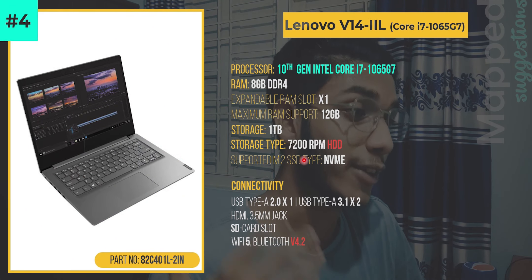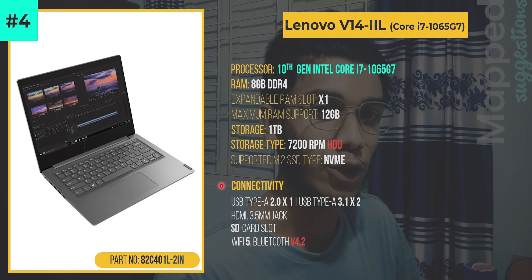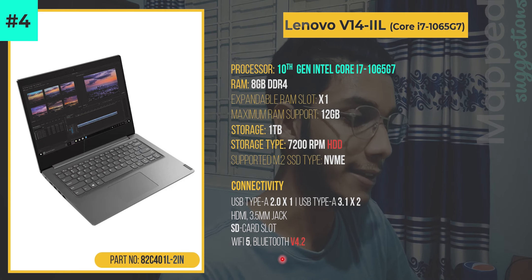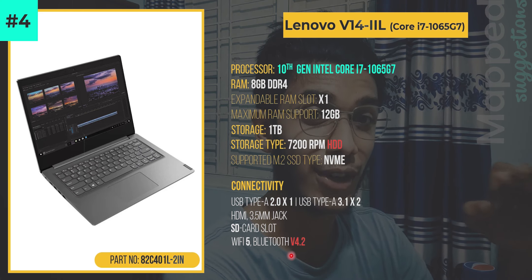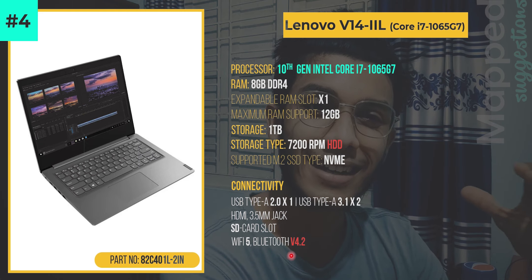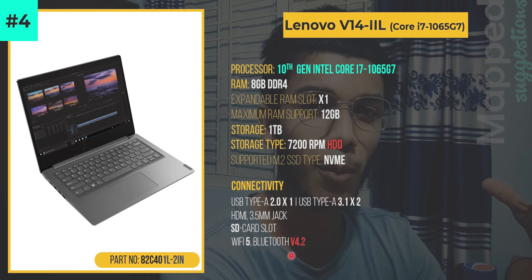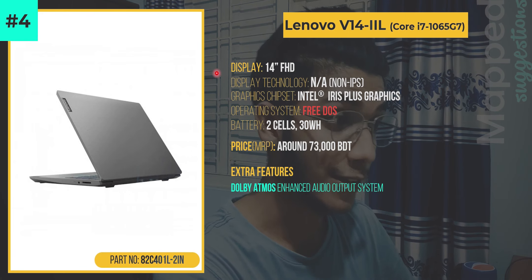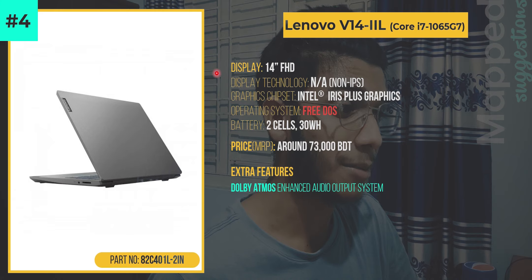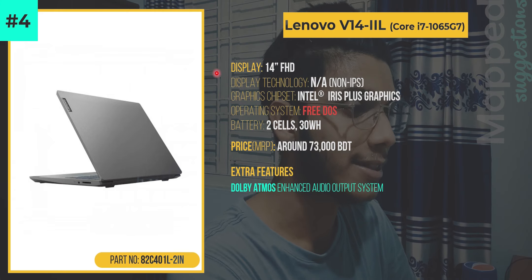The 7200 RPM hard disk is faster than a normal 5400 RPM hard disk, but ultimately having only a hard disk is a disadvantage of this particular laptop. For connectivity, it has Bluetooth version 4.2. Ideally Bluetooth 5.0 would be expected. The display is 14 inch full HD, and the operating system is free DOS, which is another disadvantage.